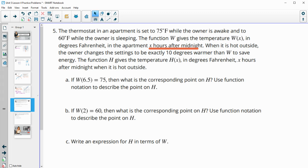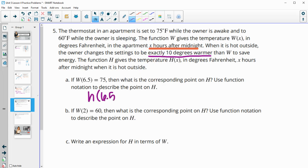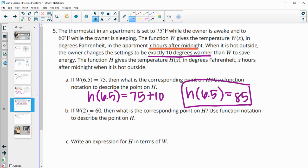So if W of 6.5 equals 75, what would be the corresponding point on H? So remember H is exactly 10 degrees warmer. So for H of 6.5, this is going to equal 75 plus 10 or your W function plus 10. So H of 6.5 is going to equal 85. So 10, exactly 10 degrees warmer. So if W of 2 equals 60, what's the corresponding point on H? So H of 2 would equal 60 plus 10 or that W of 2 plus 10. So H of 2 is going to equal 70.